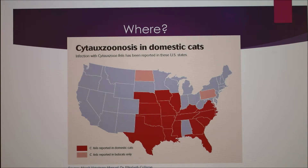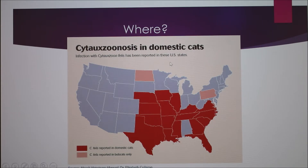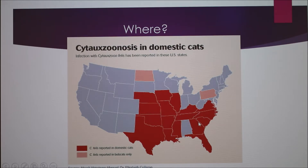This is a map of about where the infected bobcats are, and thus infected domestic cats. There are some bobcats up here, but no reported domestic cats, and the same up here. It's pretty much all in the southeastern part of the states.